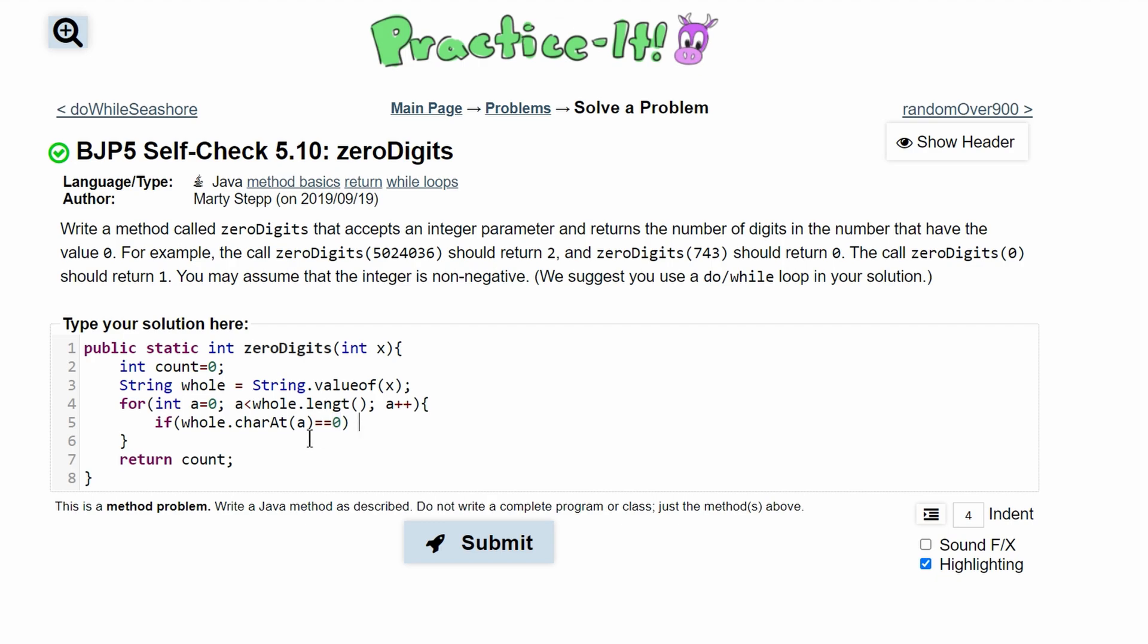We'll say a is equal to zero. This will actually give us an error because we are trying to compare a character to an integer.